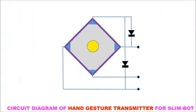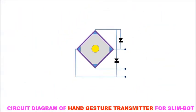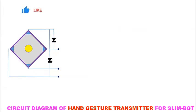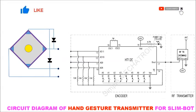This is the circuit diagram of hand gesture control system for SlimBot. The three pin outs of sensor are connected to existing HT12A encoder and wireless transmitter as shown here.